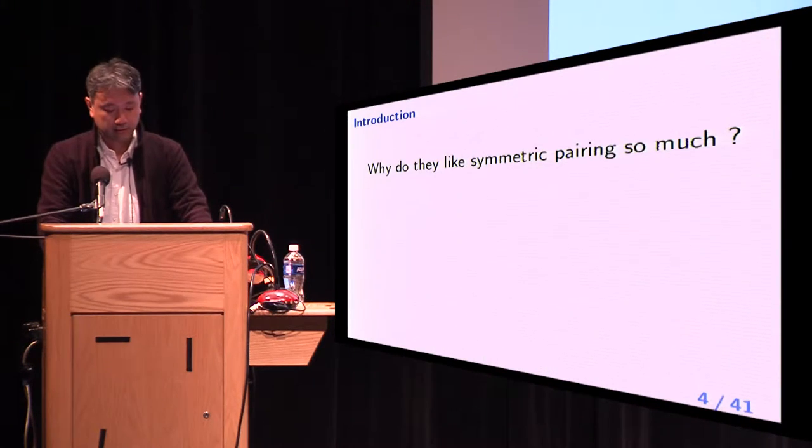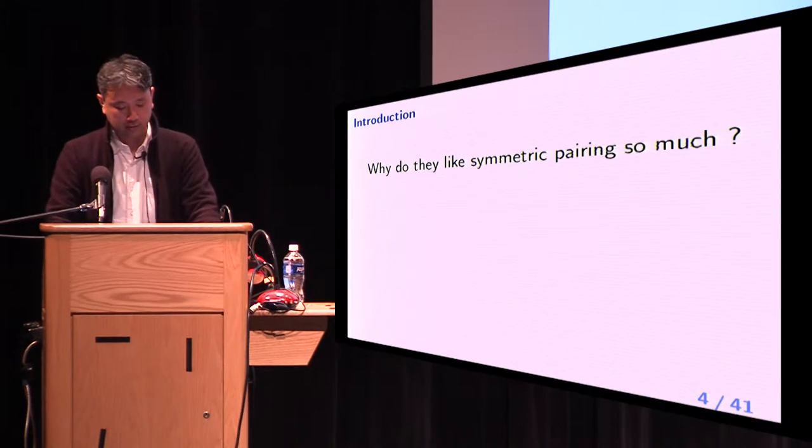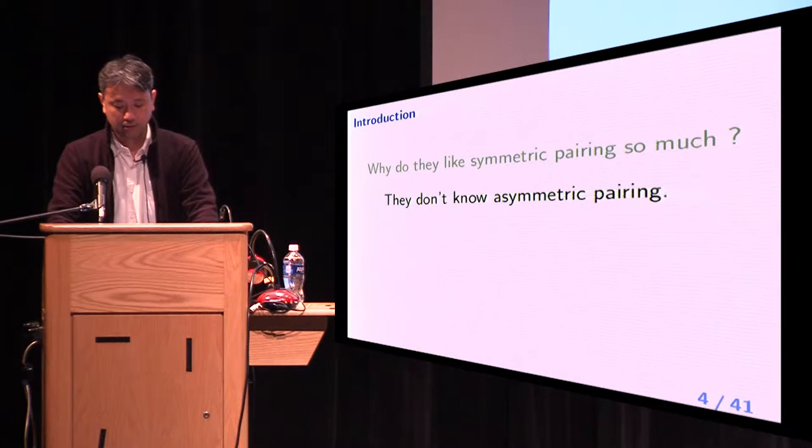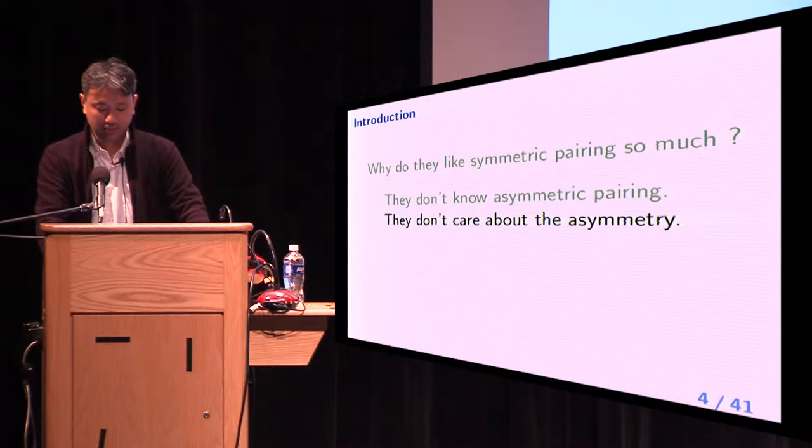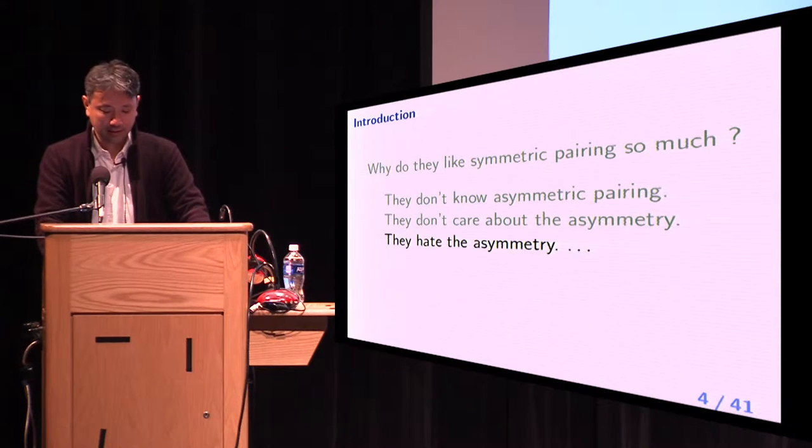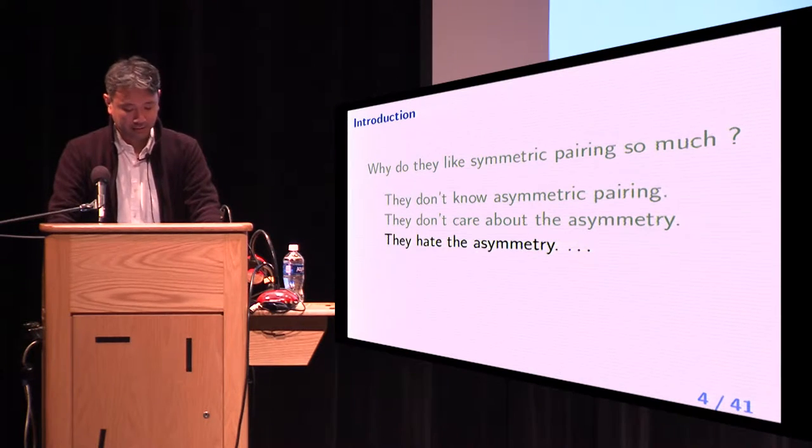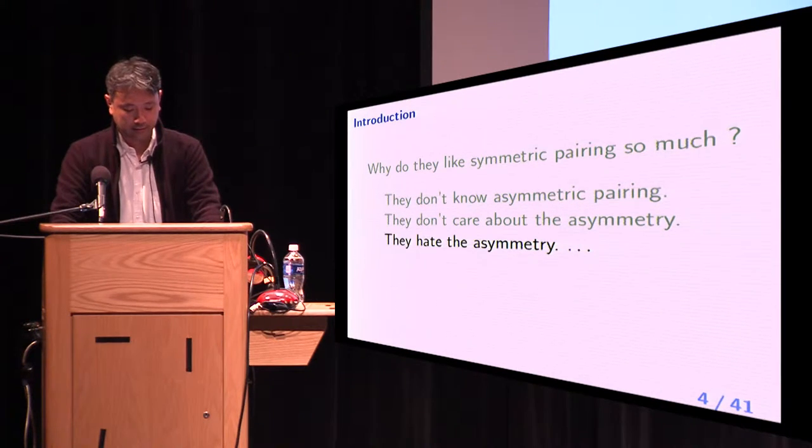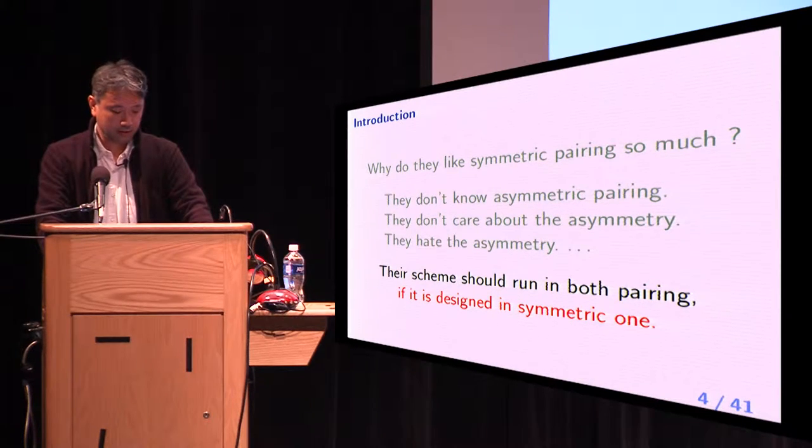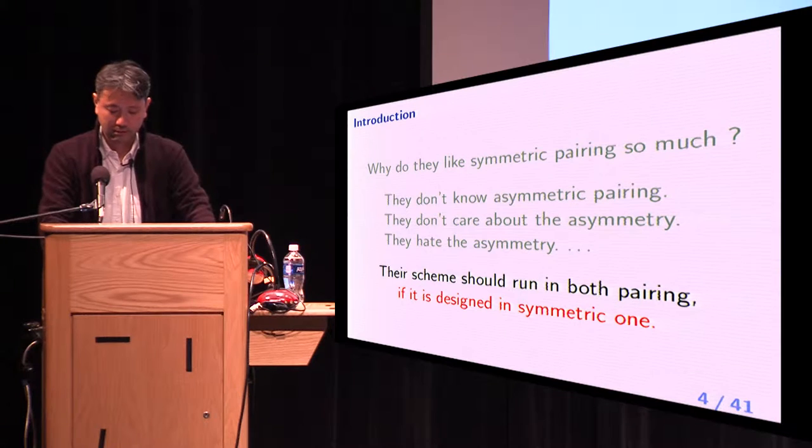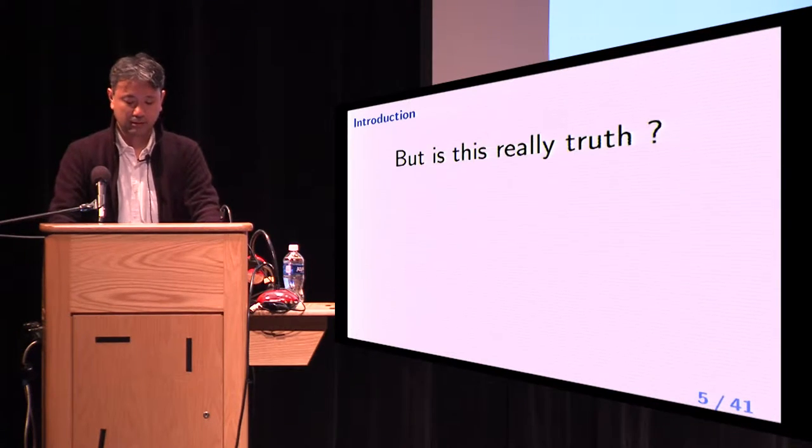Why do they like symmetric pairing so much? There are many reasons. They don't know asymmetric pairing. They don't care about asymmetry. They hate the asymmetry. But I think one important reason is that the scheme should run in both pairings if it is designed in symmetric one.